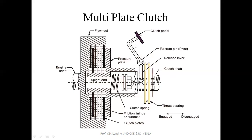This is how the multi-plate clutch works. This multi-plate clutch is also called a wet clutch because the clutch plates are immersed in oil. Since there is maximum friction, more heat is generated, and oil is used to dissipate that heat. In contrast, the single-plate clutch has a larger plate area exposed to the atmosphere, so heat generated is dissipated to the atmosphere without any oil or cooler needed.